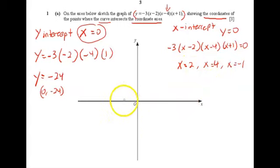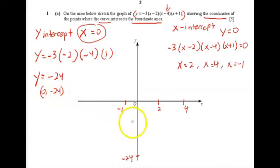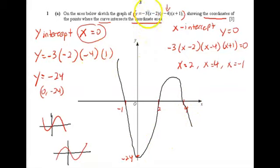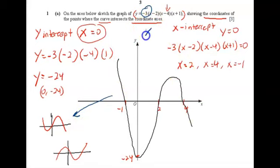Now we plot all these values on the graph: negative 1, two, and four on the x-axis, and negative 24 on the y-axis. It's time to draw the graph — we start from the top. For drawing a cubic graph, note: if the coefficient of x³ is negative, you get this shape; if positive, you get the other shape.